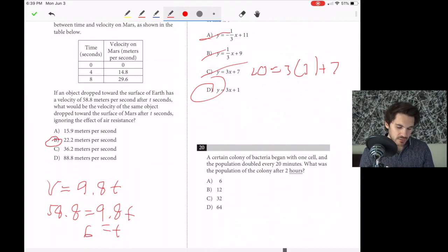Number 20. A colony of bacteria began with one cell and the population doubled every 20 minutes. What was the population after two hours? Just do it out. After 20 minutes, it's at 2. After 40 minutes, 4. After an hour, 8. Hour 20, 16. Hour 40, 32. Two hours, 64. Done.